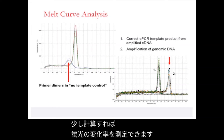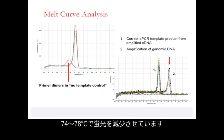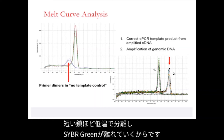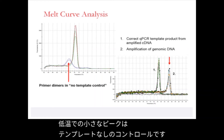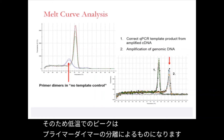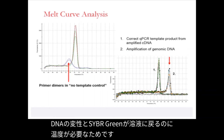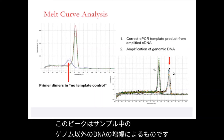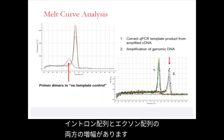With a bit of maths, we can measure the rate of change in fluorescence. In the first graph, the majority of products show a decrease in fluorescence at 74 to 78 degrees as the shorter strand separates at a lower temperature and SYBR Green 1 drops off. The smaller peak at the lower temperature was in a no-template control, therefore the peak observed at the lower temperature is due to the separation of primer dimers. In the second graph on the right, we observe a peak at a high temperature — this product is larger and the temperature required for the DNA strand to denature and SYBR Green 1 to go back into solution is higher. This peak is due to amplification of non-genomic DNA in the sample, observing amplification of both intronic and exonic sequences.